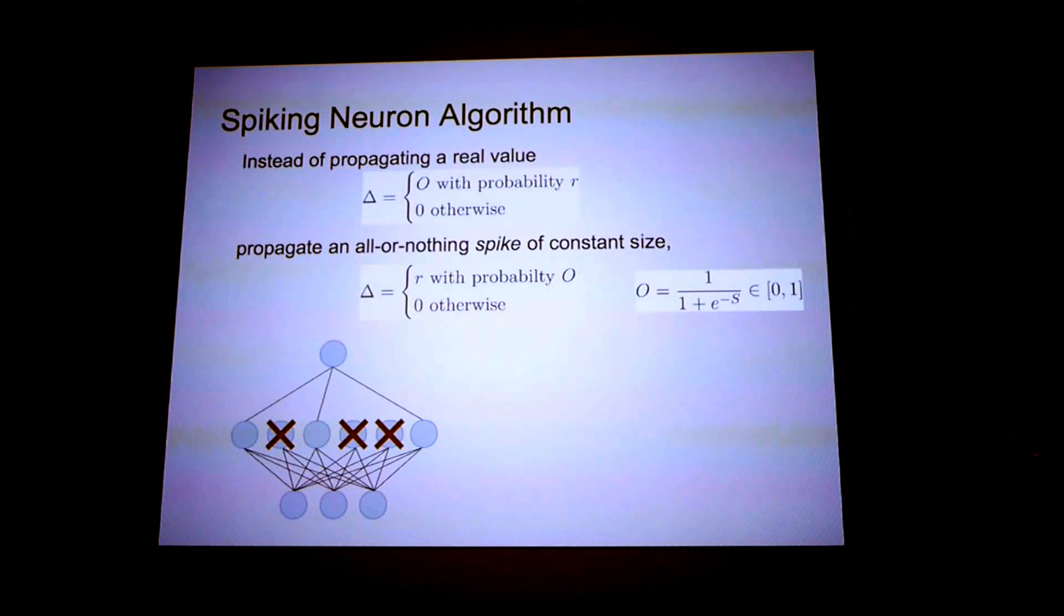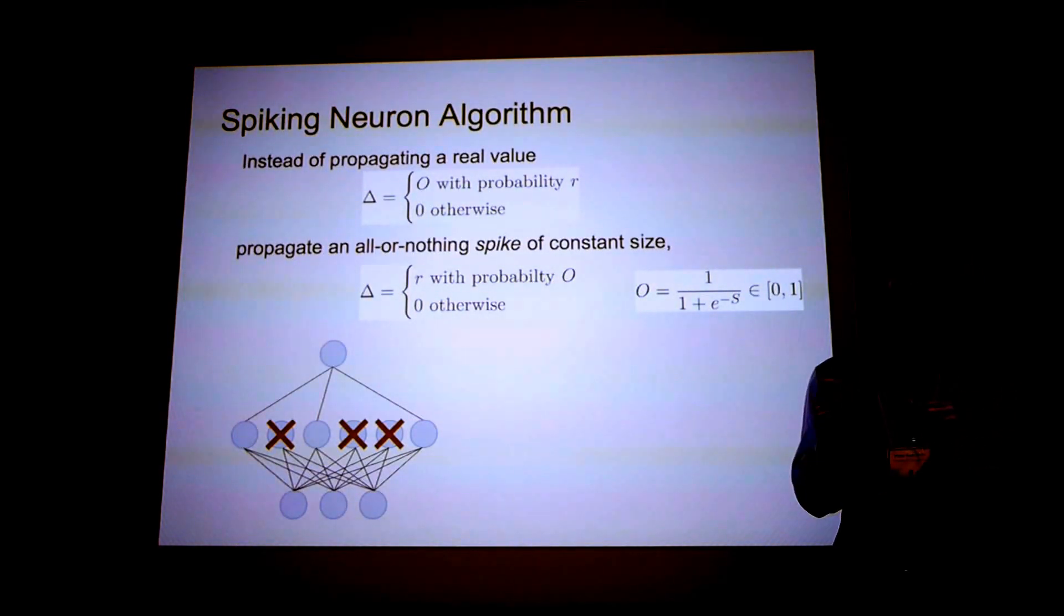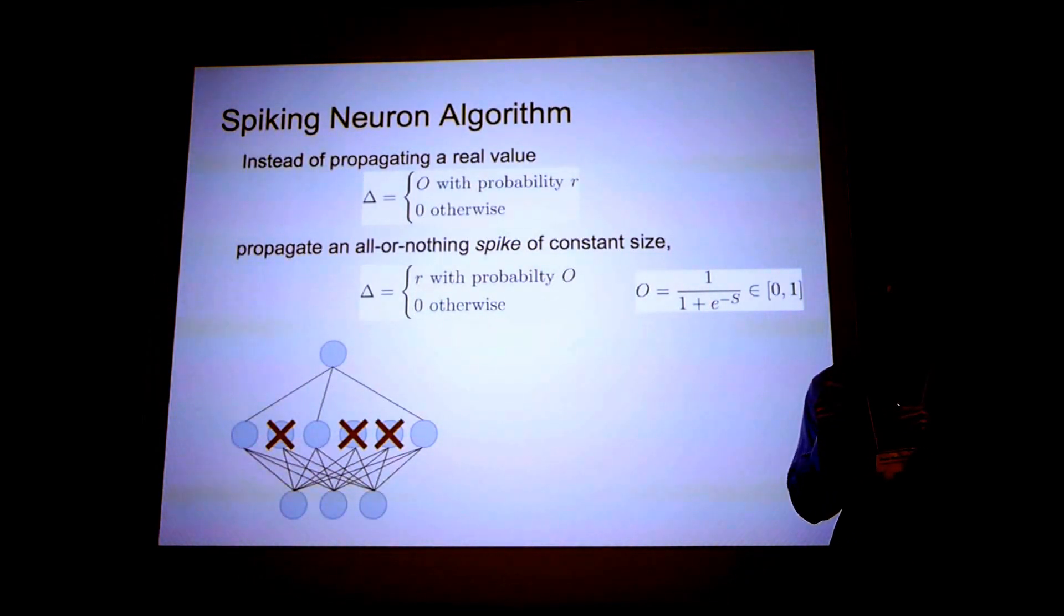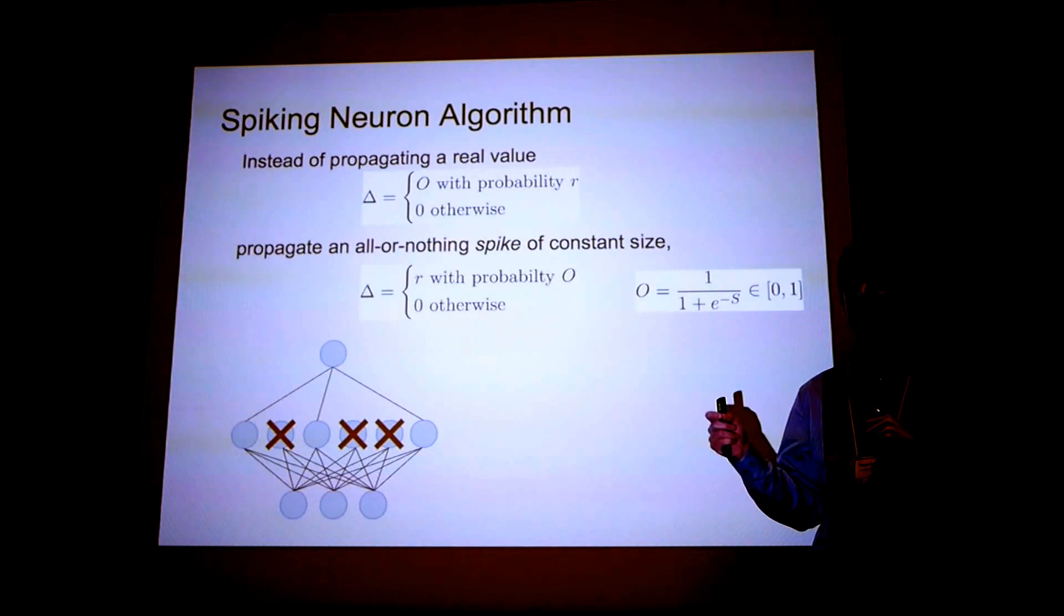So the first variant I want to talk about was actually proposed by Jeff Hinton in one of his dropout talks. And that's the idea of this stochastic spiking neuron. So instead of sending a real value to the next layer, what we're actually going to do is send an all or nothing spike from each neuron. And we're going to do this in a very particular way. We're going to send an all or nothing spike of size R with probability O.